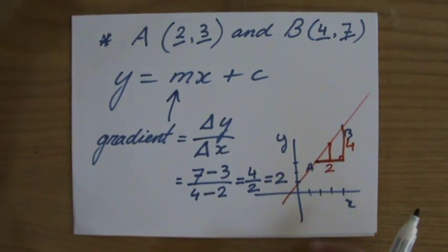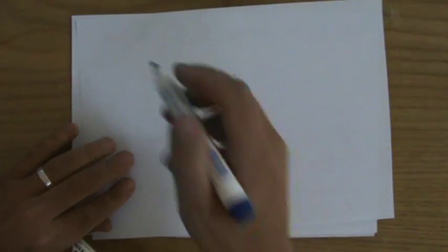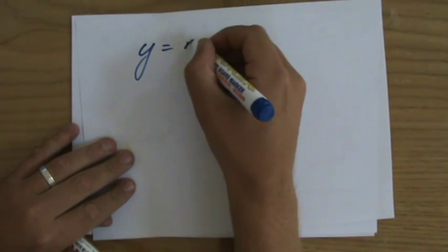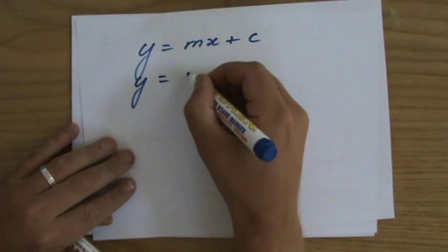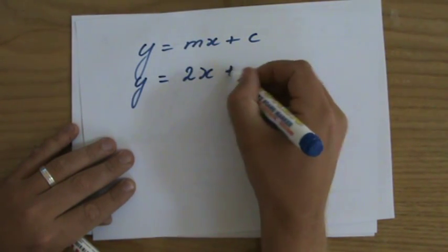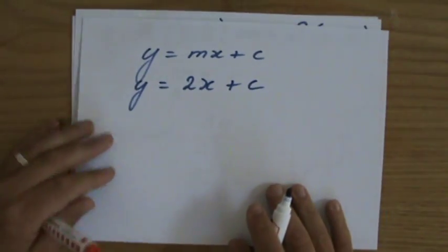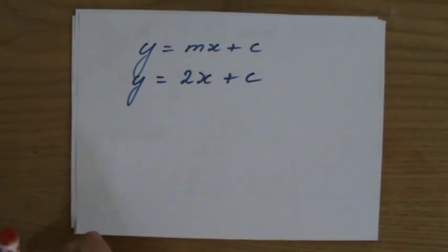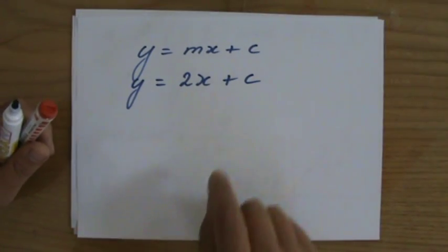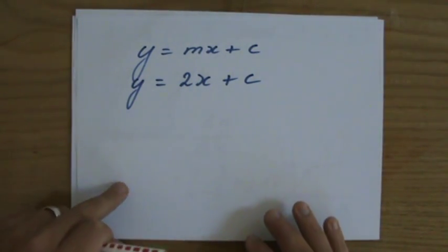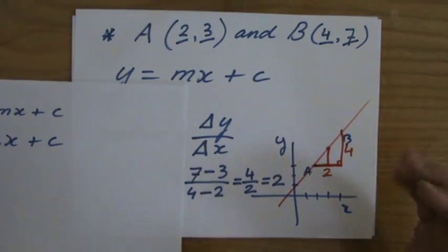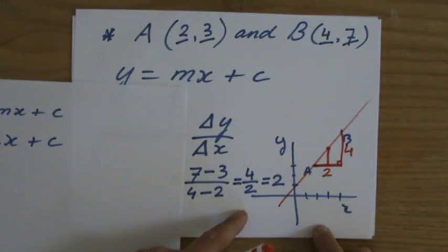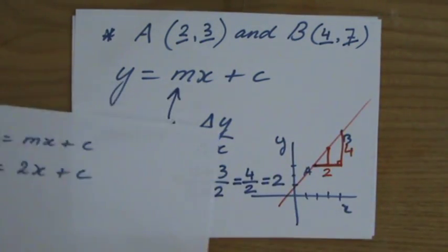Fantastic. So I'm going to take a new sheet and y equals mx plus c. But the gradient now is two. So I can swap the m for 2x plus c. So I'm one step closer to my answer. But the only thing now I have to do is to find out where does it cut the y-axis. Now, I can't see that here. This is a sketch. When they give me the graph, I can visually see the y-intercept where it cuts or intersects the y-axis. But this is a sketch. I can't do it like that.